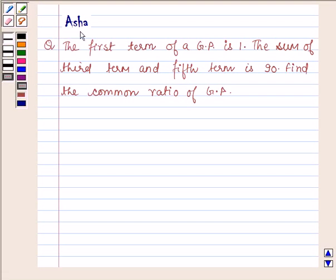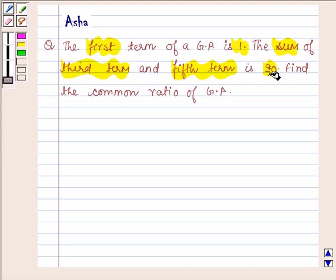Hello and welcome to the session. I am Asha and I am going to help you with the following question which says the first term of a GP is 1. The sum of third term and fifth term is 90. Find the common ratio of GP.